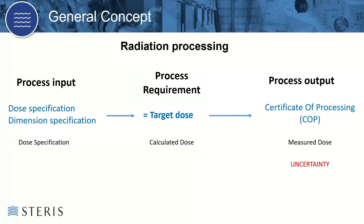In radiation processing, we have a process input — which is really the dose specification and the dimension specification — meaning we want to make sure that the validated state remains after the PQ, so the box sizes aren't changing from the way we validated during PQ mapping. We have a process requirement, which is the target dose. And then we have a process output, sometimes called the certificate of processing. This is the measured dose, and the measured dose has an uncertainty associated with it.